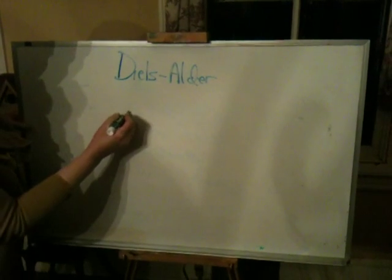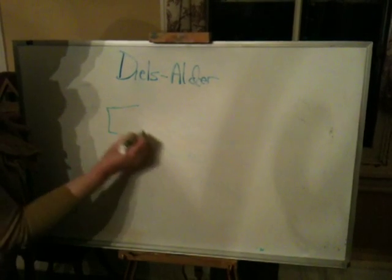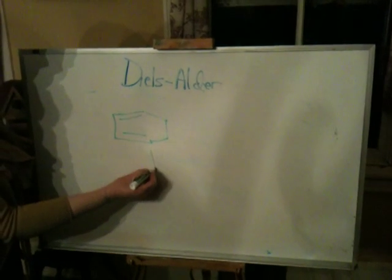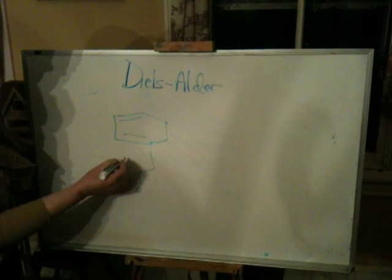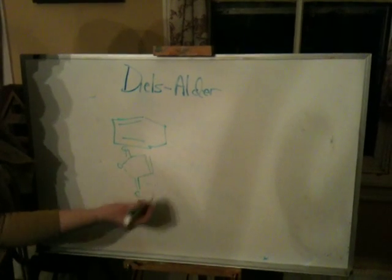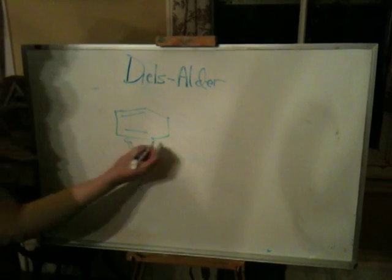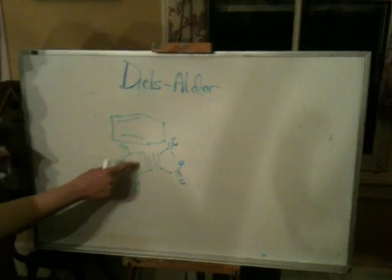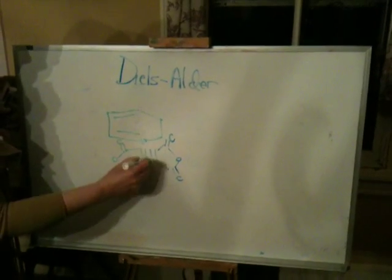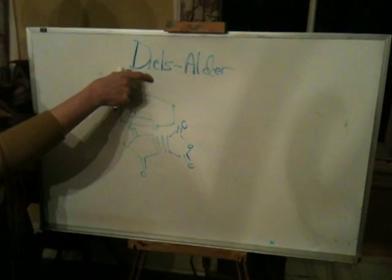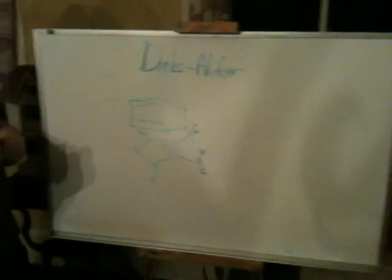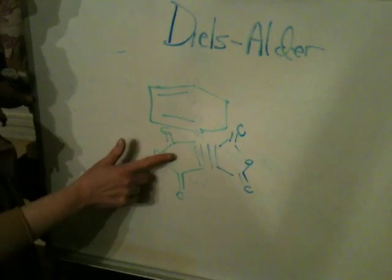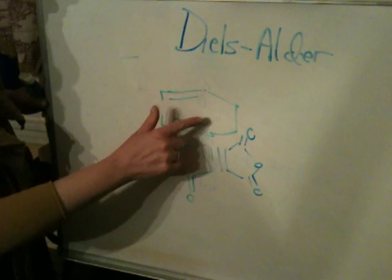So we were looking at cyclohexadiene as it was reacting with maleic anhydride. I told you that the maleic anhydride could come in either from the top or the bottom. It could come in like this and have its orbitals overlap properly, and this same thing could happen on the top face. I'm using the bottom face because it's a little easier to follow. When the dienophile is facing such that its pi system is underneath the pi system of the diene, that is endo.